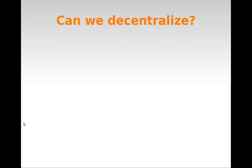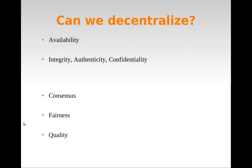And is it possible to decentralize these content dissemination patterns? There are several issues in networked systems that need to be addressed. For example, can peers exchange messages? The issue of availability is not a problem in decentralized systems, exactly because they do not have a single point of failure.